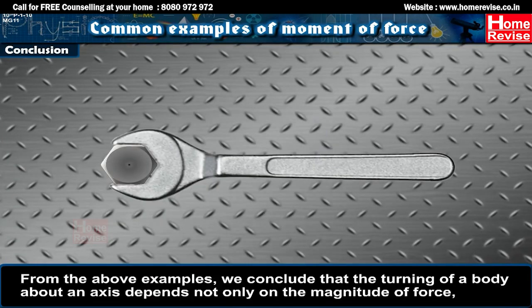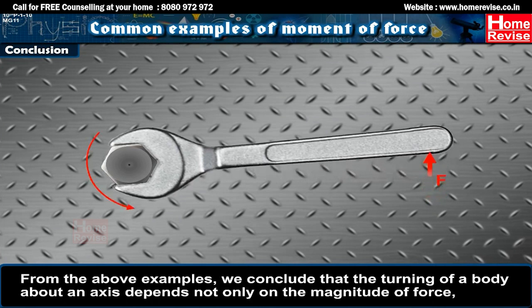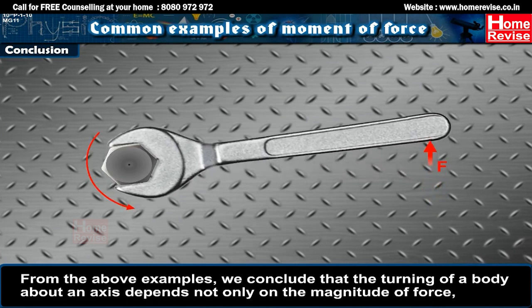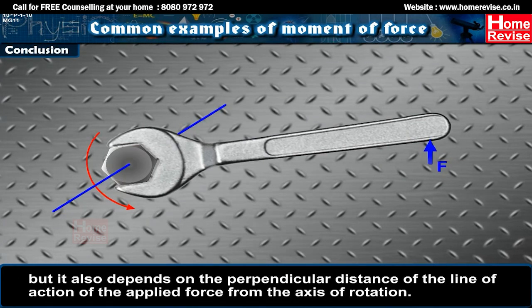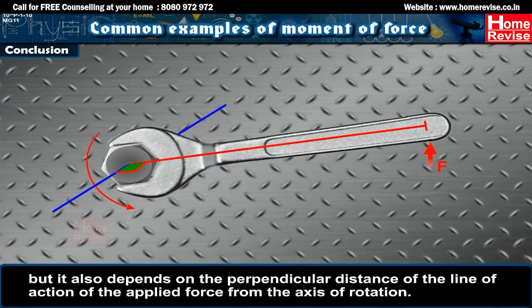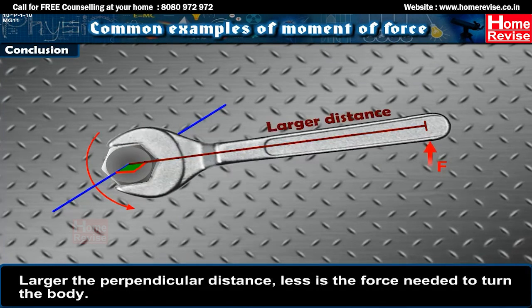From the above examples, we conclude that the turning of a body about an axis depends not only on the magnitude of force, but it also depends on the perpendicular distance of the line of action of the applied force from the axis of rotation. Larger the perpendicular distance, less is the force needed to turn the body.